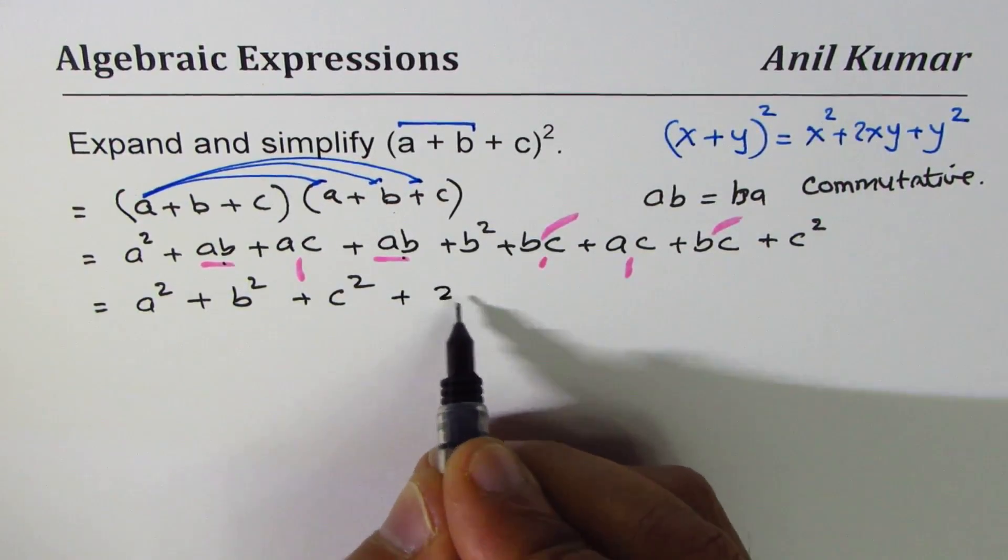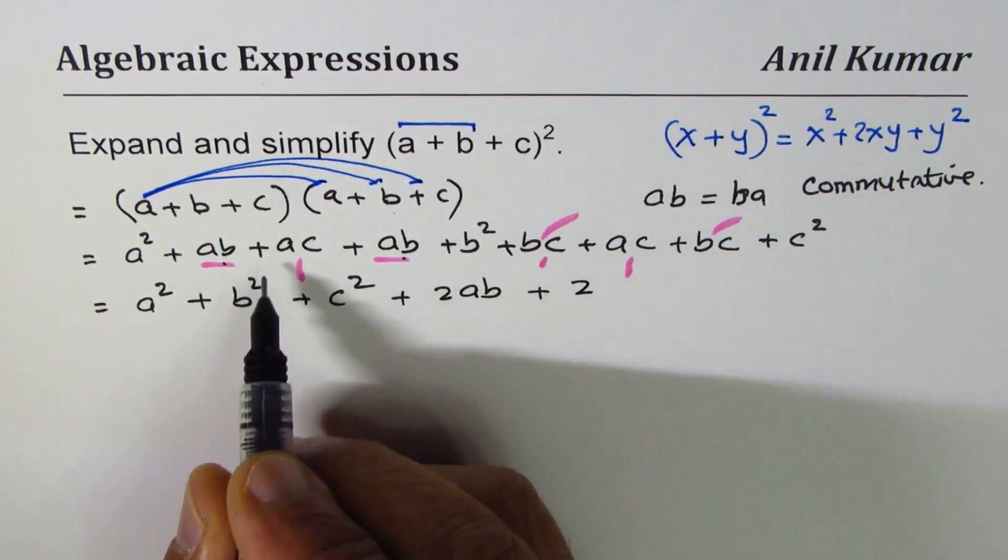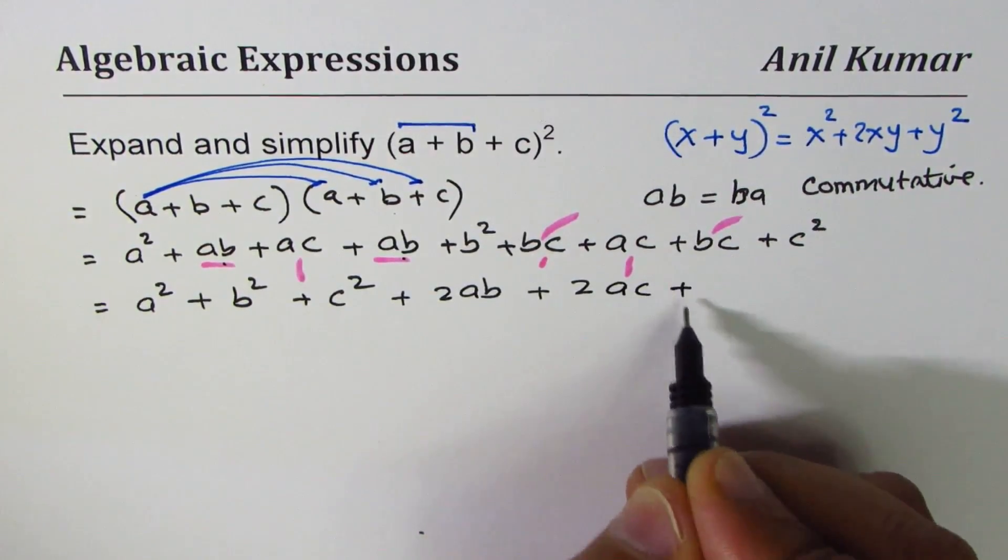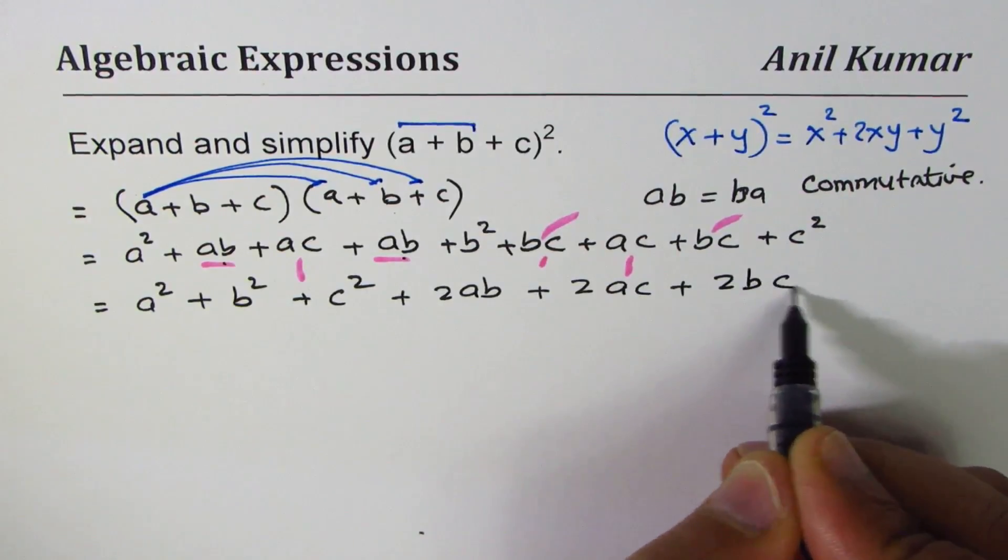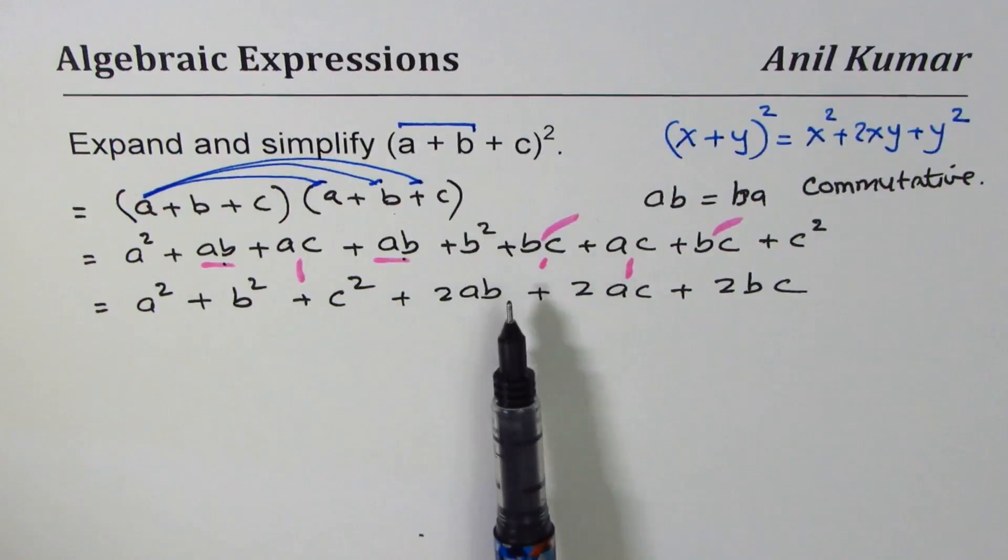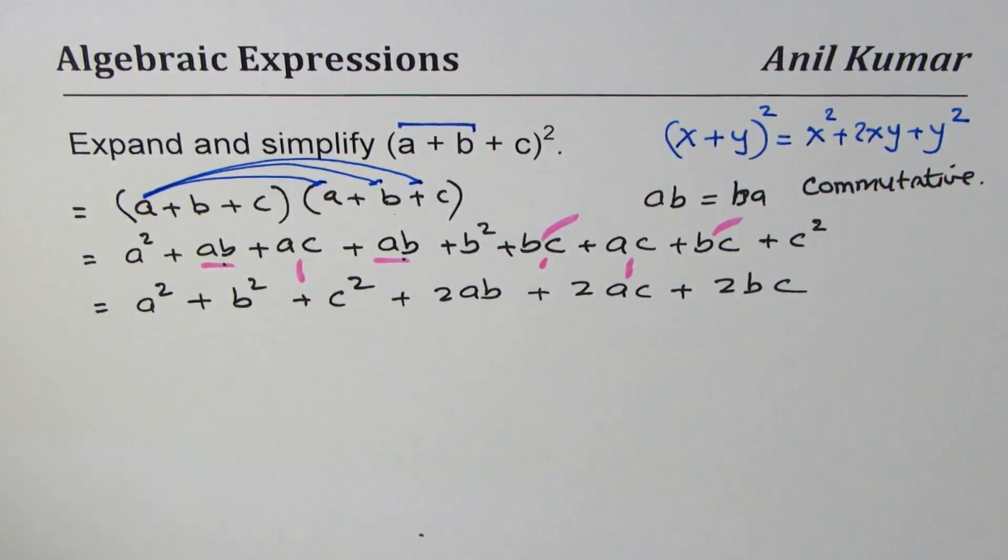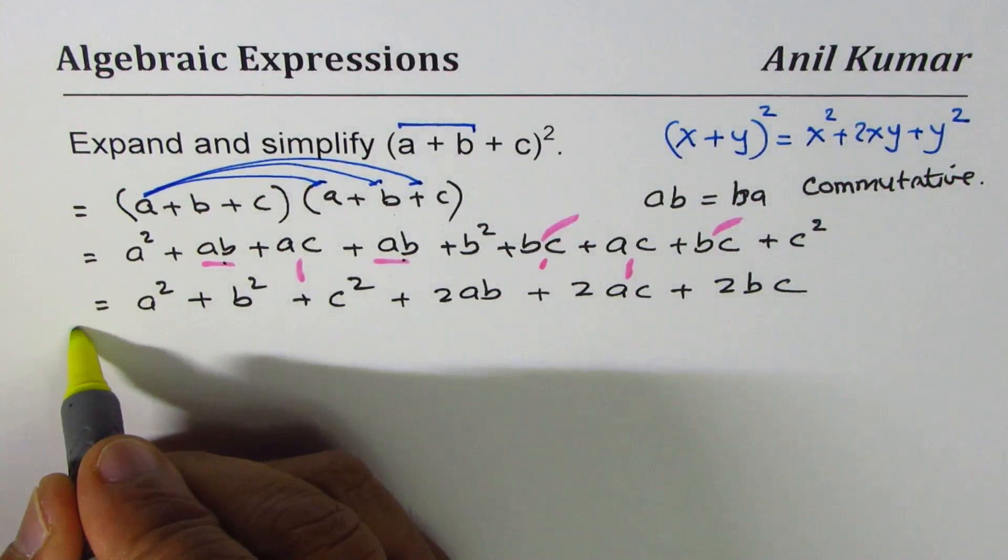That takes care of all the terms, so we can now write here 2ab + 2ac + 2bc. Does it make sense? So you could do like this and you get your expression. That's an easy way to expand (a + b + c)². The result is you get a² + b² + c² and you also get 2ab, 2ac, and 2bc.